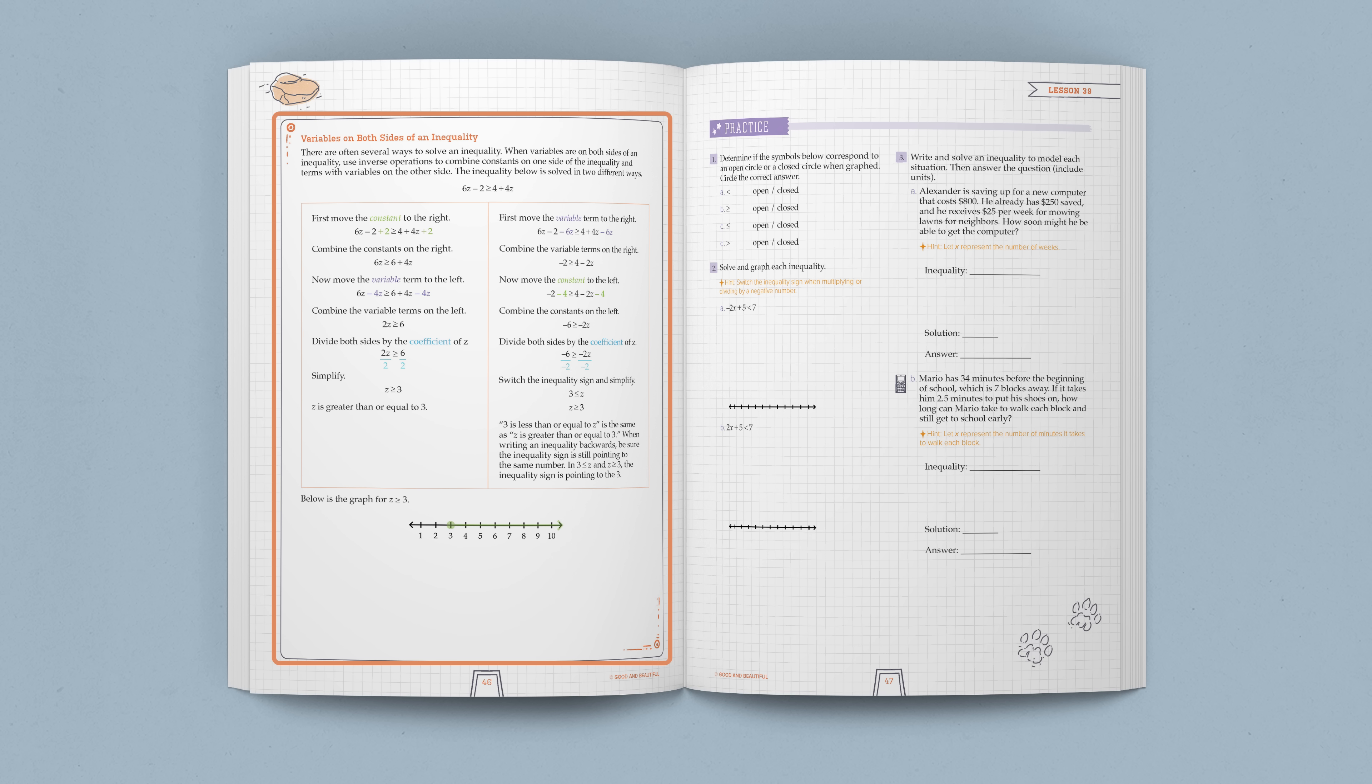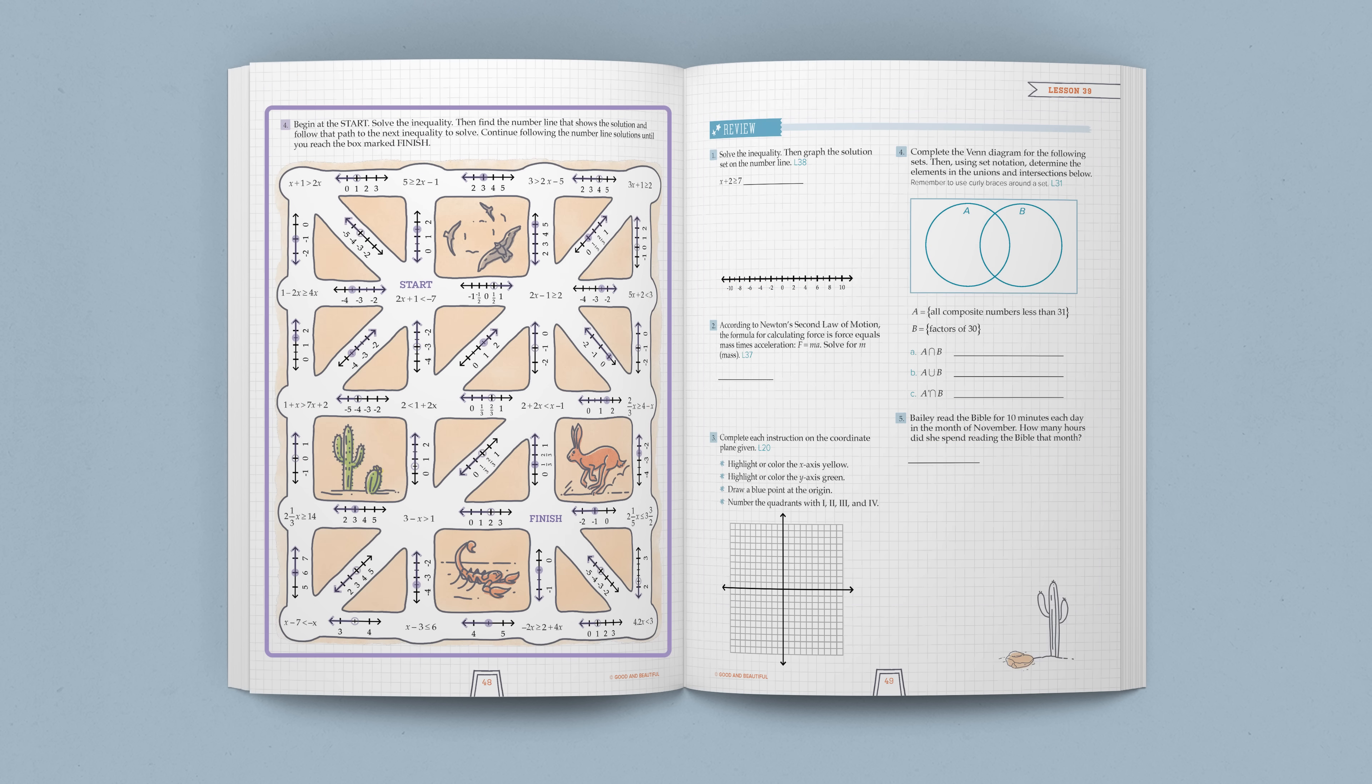After reading the optional Lesson Overview, students complete a practice section to work on concepts learned in the lesson. The practice section provides scaffolding that allows students to start with simple problems that progress in complexity. Last, students complete the review section to practice concepts learned in previous lessons.